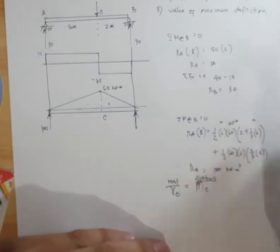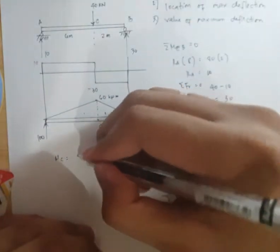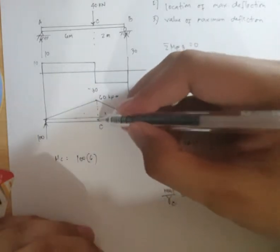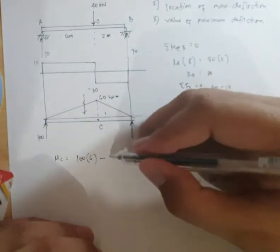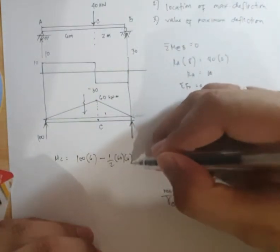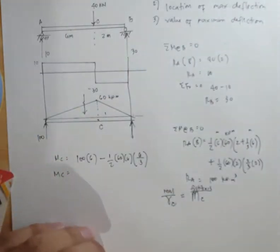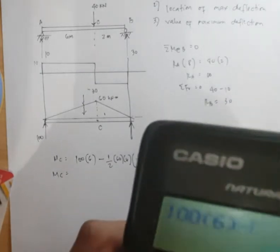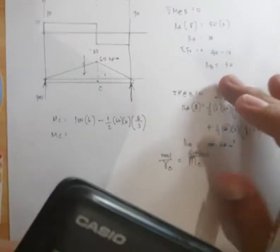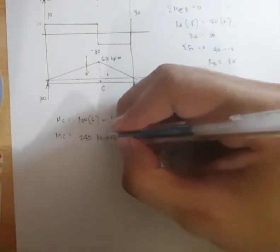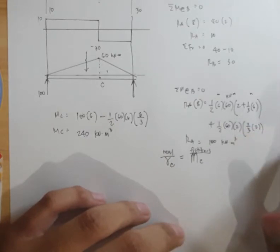Okay. So, moment at C is equal to 100 times 6 which is ang reaction minus area times centroidal distance. So, one half 60 by 6 then, 6 divided by 3. So, moment at C. Using your calculator. So, we have 240 kilo Newton meter cube.